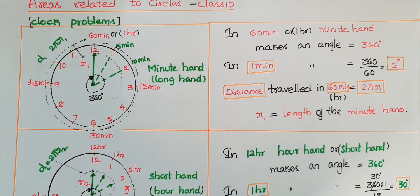Hello everyone. Today I am going to explain how to find the angles made by a minute hand and an hour hand, and the distance traveled by a minute hand and an hour hand. These are from 'Areas Related to Circles', Class 10.